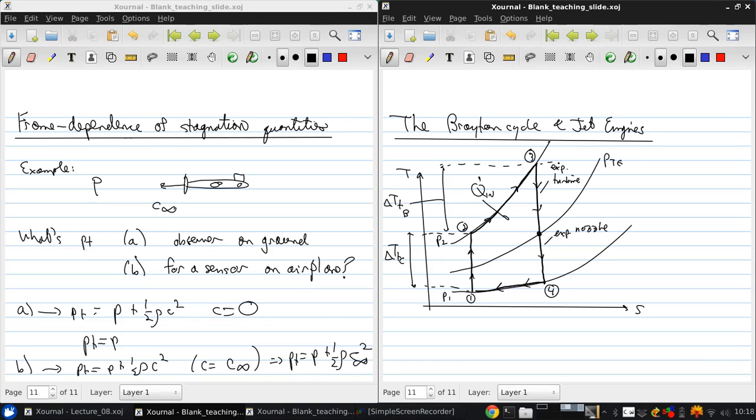The temperature difference from the peak temperature to this point is the stagnation temperature change across the turbine. And this temperature change is the temperature change across the nozzle. At the bottom, we have the heat removal from the cycle.